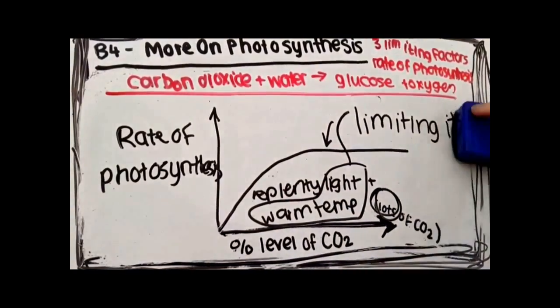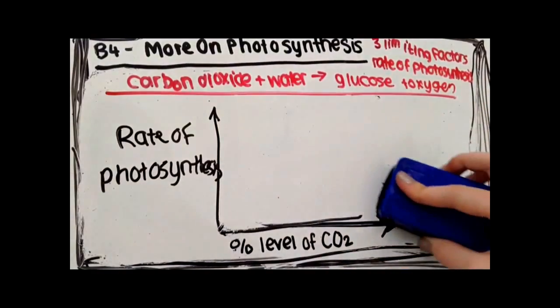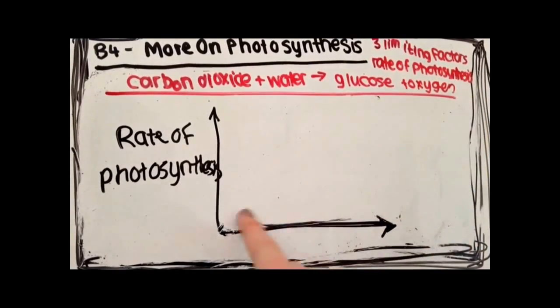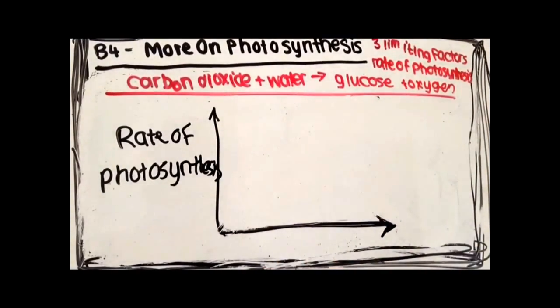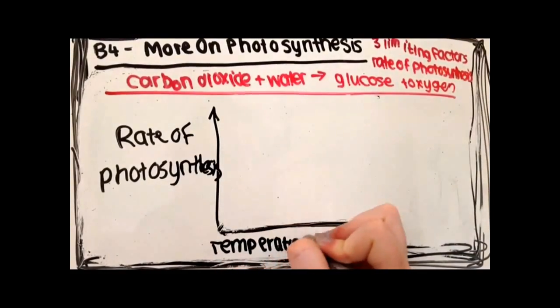As long as there's lots of light and CO2, then the limiting factor of photosynthesis must be temperature. And so temperature is the final one. And the temperature has to be just right.